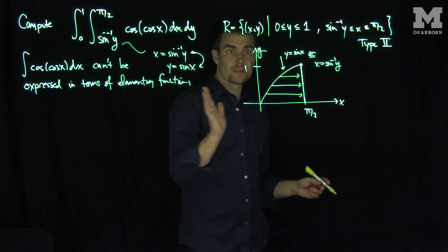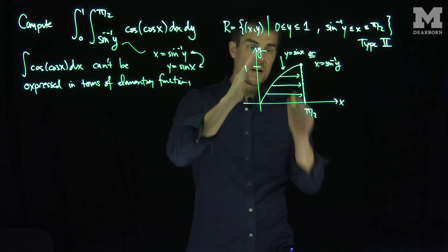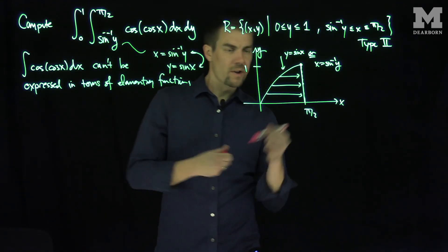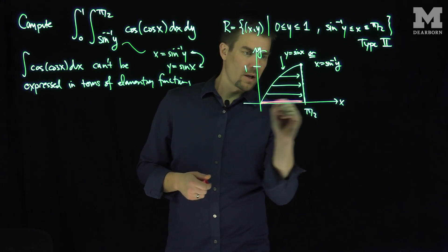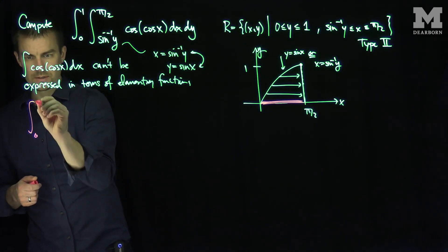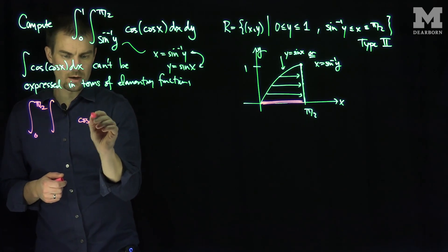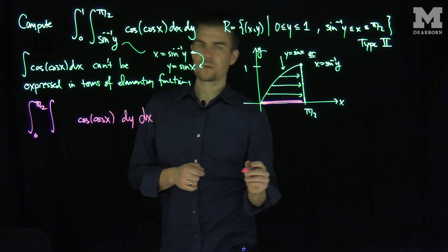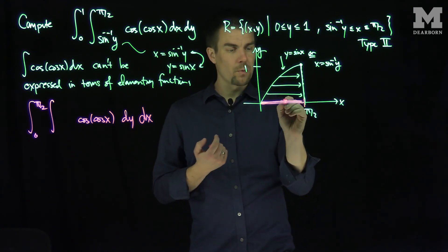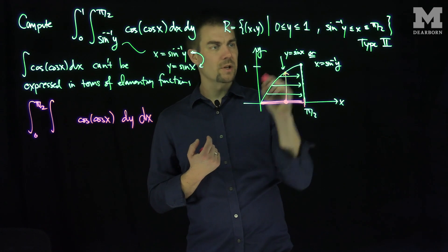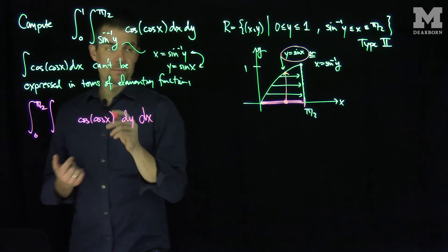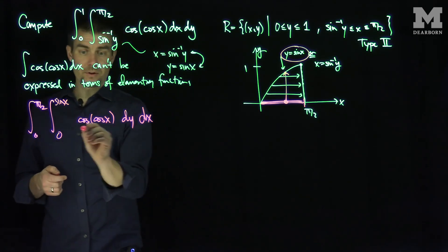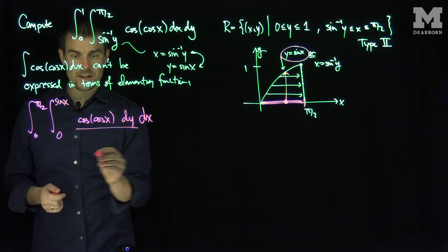This was a type 2 region to start, but I can also think of this as a type 1 region. For the type 1 description: x goes between 0 and pi over 2, and y goes from 0 up to sine of x. The reason this is much nicer is because when we do the y integral of cosine of cosine of x, there are no y's, so that's an easy antiderivative to compute.